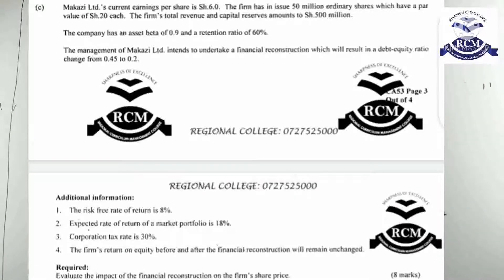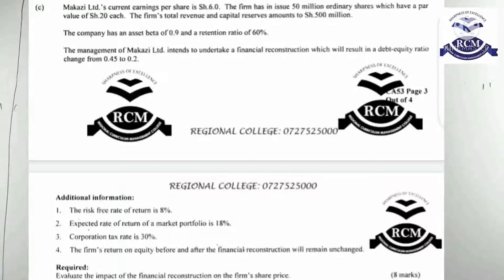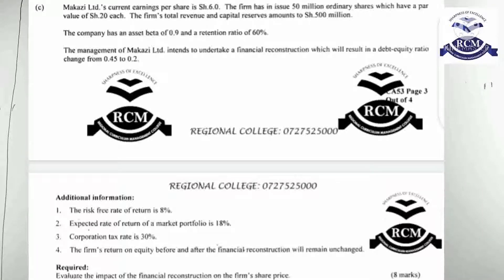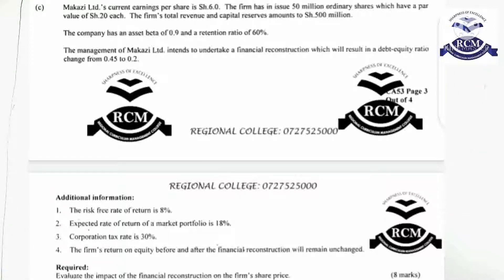We've been given the asset beta — the ungeared beta. The management of Makazi Limited intends to undertake financial reconstruction, which will result in the debt-to-equity ratio changing from 0.45 to 0.2. Currently debt-to-equity is 0.45, meaning debt is 0.45 and equity is 1. With the new restructuring, debt will be 0.2 when equity is 1. So in all scenarios there is debt, meaning I need the equity beta, not the asset beta. The Hamada formula will come into play.